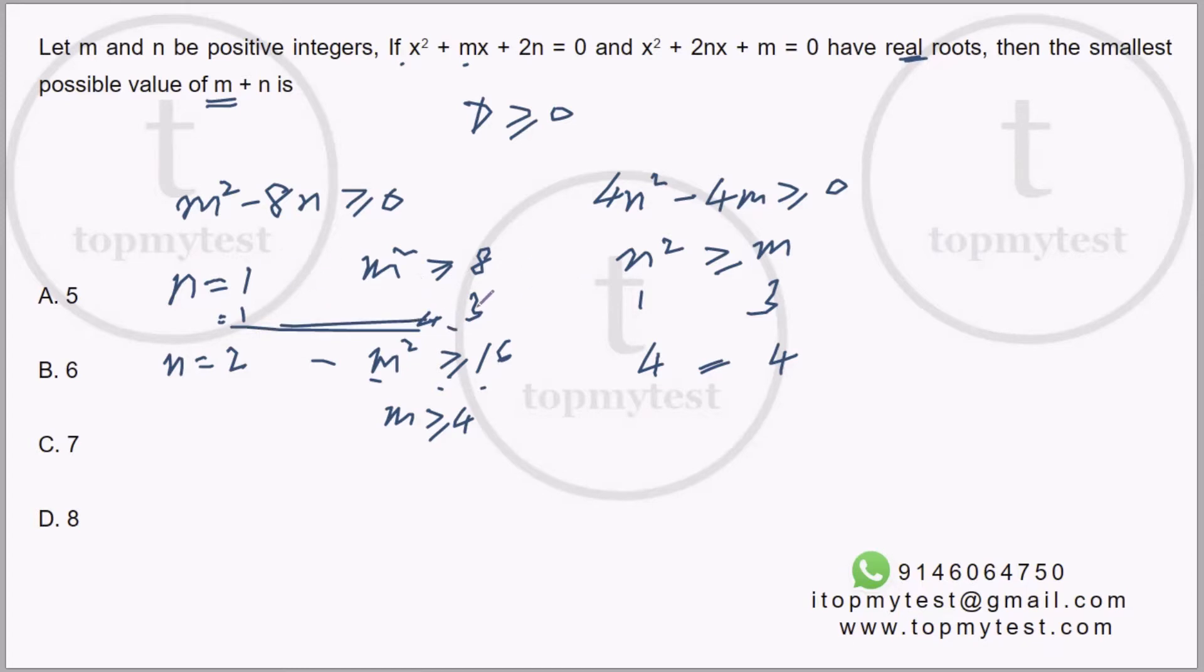So 1 + 3 = 4 does not satisfy. 1 + 4 = 5 does not satisfy. 2 + 4 = 6 satisfies. Minimum possible value is 6.